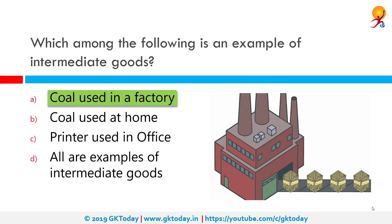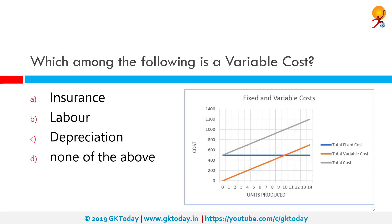Which among the following is a variable cost? The correct answer is labor. Variable costs are costs that change as the quantity of the good or service that a business provides changes. Common examples include raw materials, packaging, and labor directly involved in manufacturing. Labor is variable because, for instance, during inflation employees may ask for a raise — it depends on many factors.